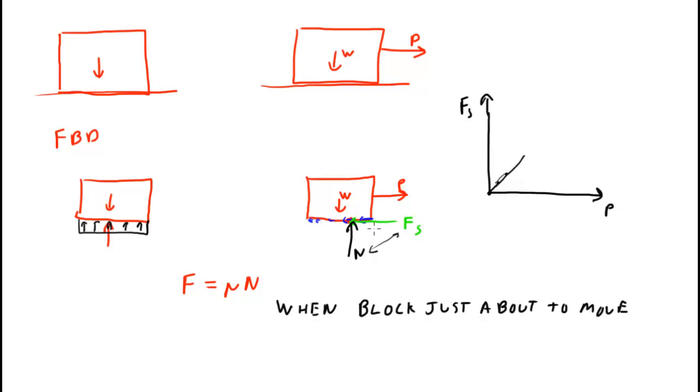However, at some point, we all know that we'll be able to pull hard enough to cause the block to slide. That means that the friction force suddenly doesn't increase anymore. And so P increases, but the friction force does not increase. This distance, or this frictional force, is equivalent to mu static friction times the normal force. So the only place you get to apply this equation is when the block is just about to move.